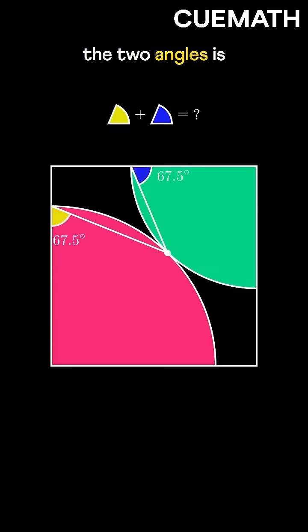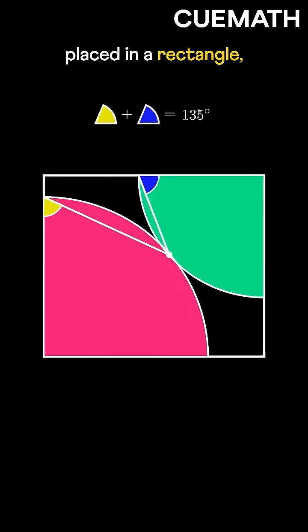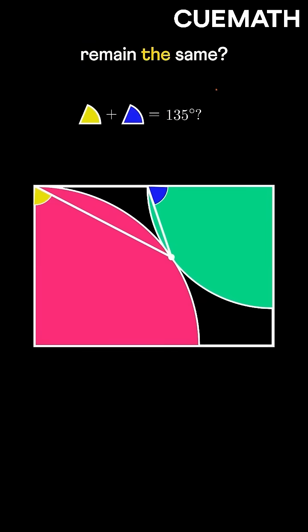So the sum of the two angles is 135 degrees. Now, if the same quarter circles were placed in a rectangle, would the sum remain the same?